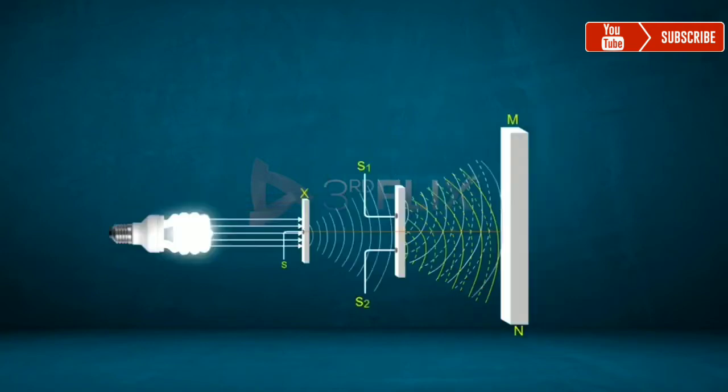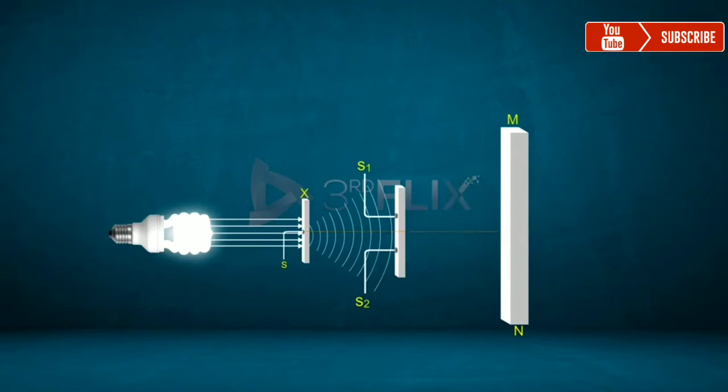Similarly, when a crest of one wave falls on the trough of another wave, and the trough of one wave falls on the crest of another wave, we get a destructive interference pattern, a dark band.